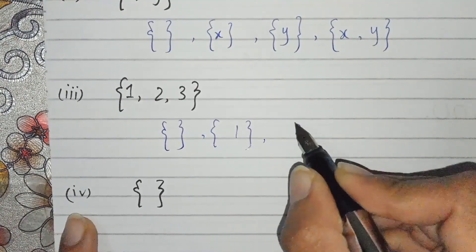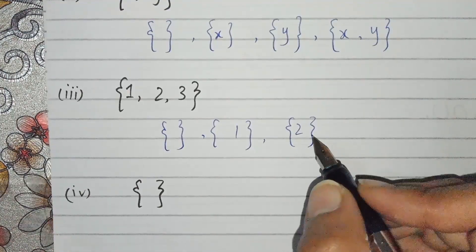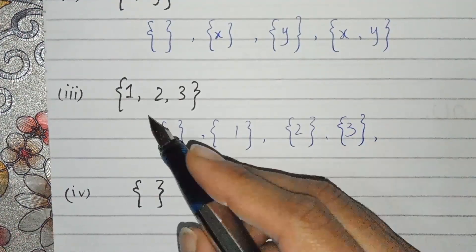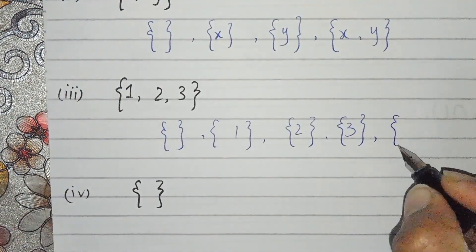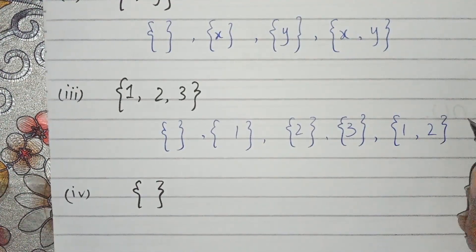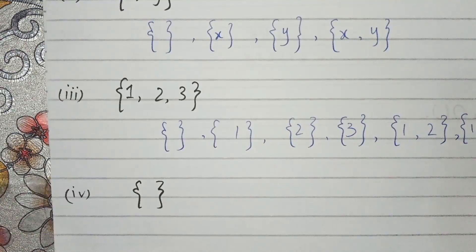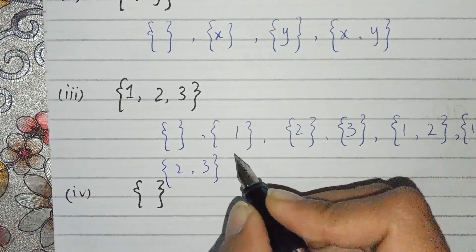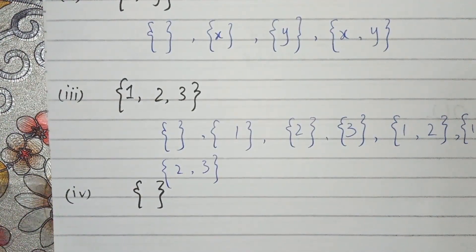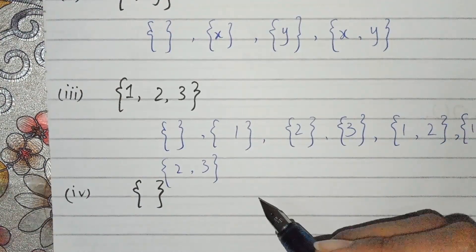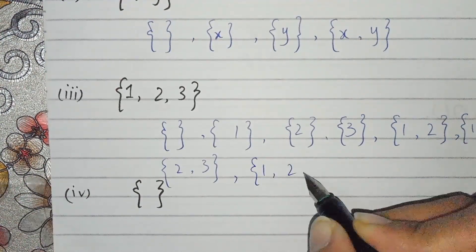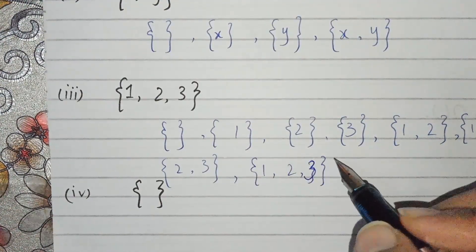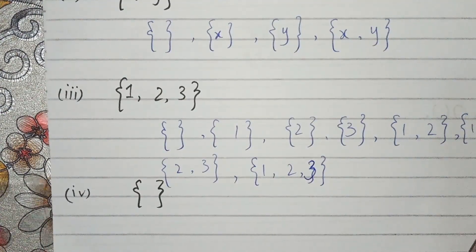First we write the empty set, then 1, 2 — we write all the subsets. Now we combine two values: we write {1,2}, {1,3}, {2,3}. Then we write the set itself, which is also a subset. These are the members of the power set of this set.